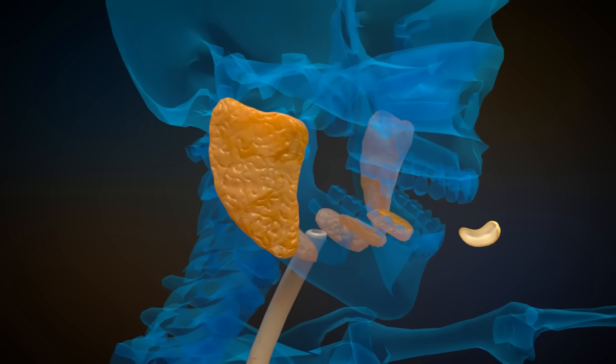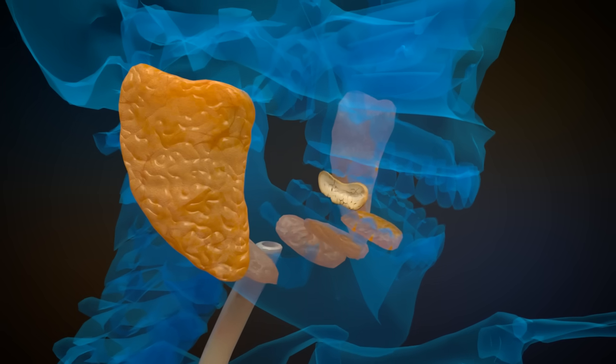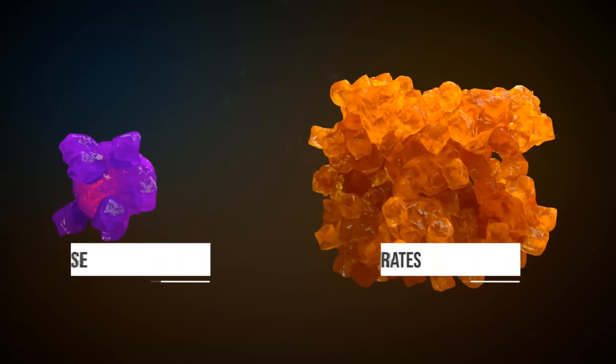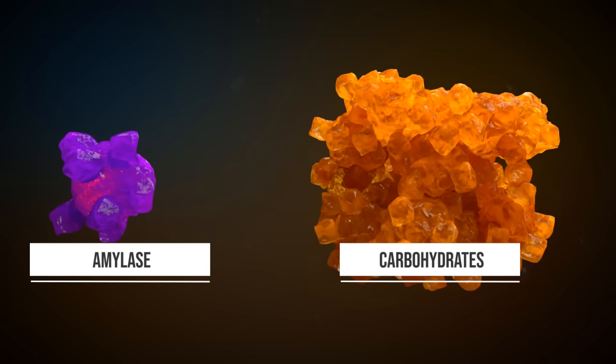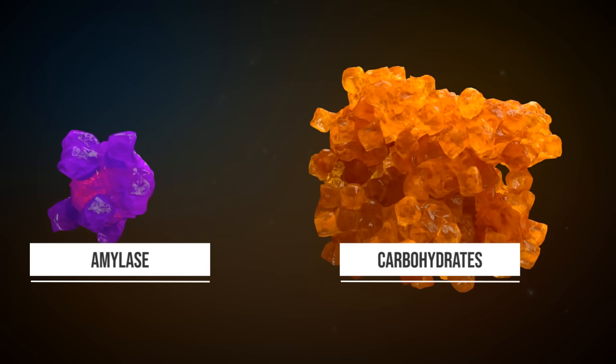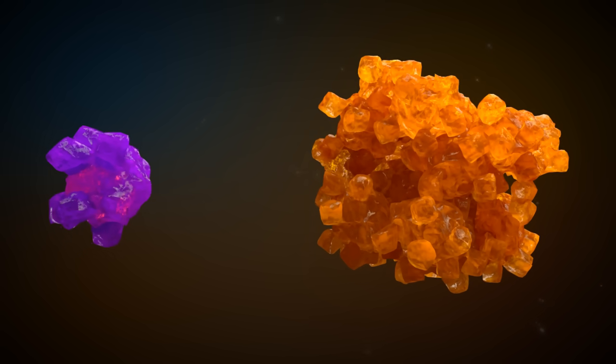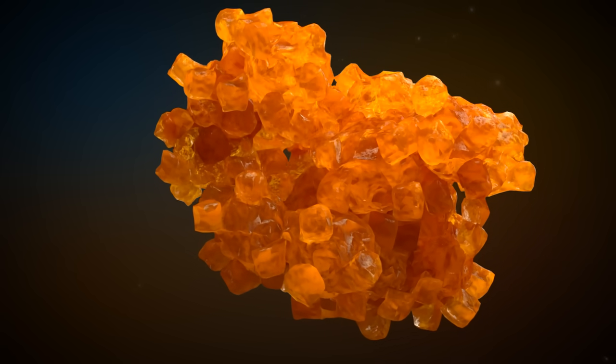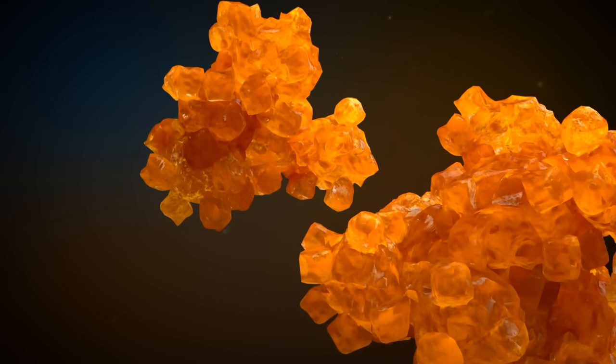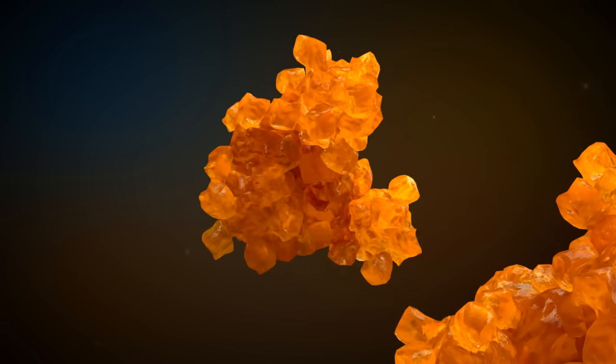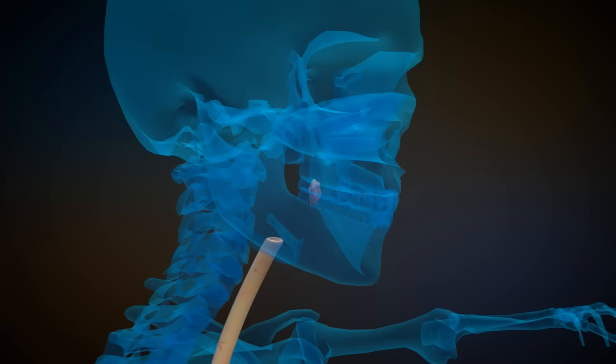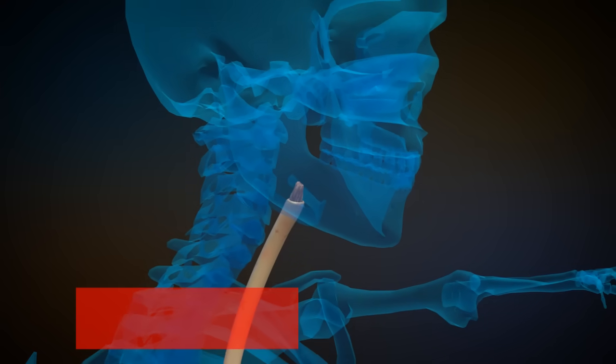First, the food is broken up in the mouth by the teeth and then mixed with saliva with the help of the salivary glands. Saliva contains a digestive enzyme called amylase that already begins to digest carbohydrates in the mouth. It splits carbohydrates into smaller units. The ball-like mixture of food with saliva, also known as bolus, is pushed into the throat by the tongue.